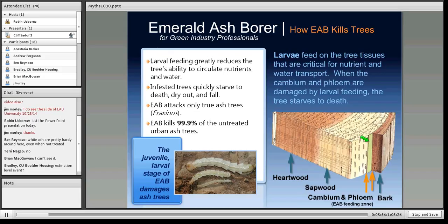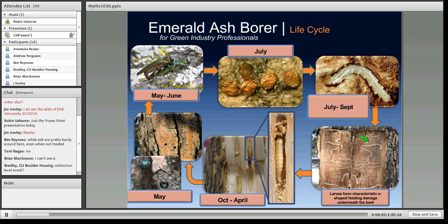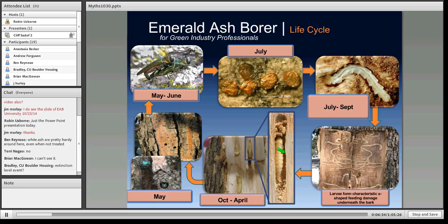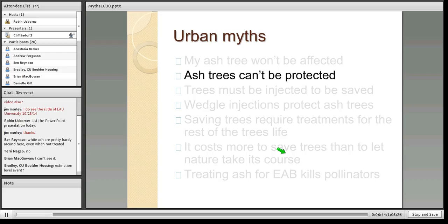The life cycle is one generation a year. Starting in May, the adults leave the tree, mate, feed on the leaves in June, then lay eggs in July. The eggs hatch into larvae that do the damage. They eventually pupate just beneath the bark and get ready to start the whole cycle over again. These are boring insects that destroy the vascular system and there really is no escape. But 12 years after this thing arrived, we've developed some nice ways to protect trees, so the myth that trees cannot be protected is definitely false.